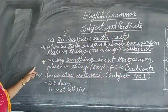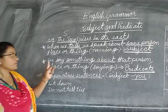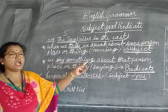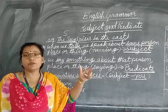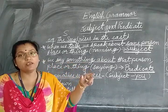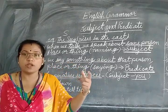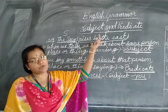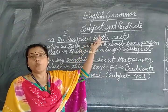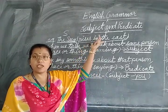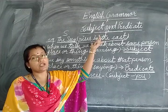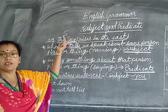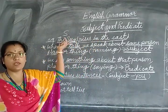Okay children, once again — the part of the sentence where we say something about a person, place or thing is known as the predicate. What we say about that person, place or thing is known as the subject.